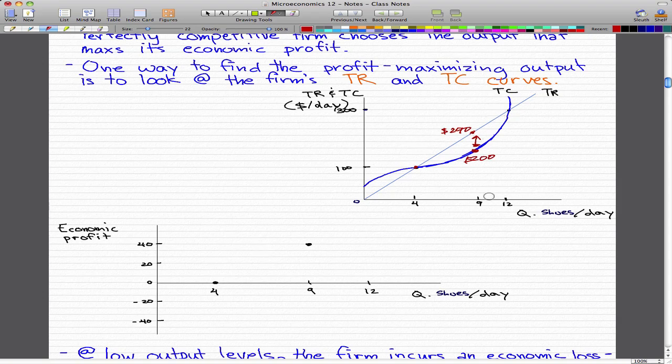Now once we increase the quantities of shoes sold per day to 12, you can see that it goes back to total cost and total revenue being the same amount. In that case, total revenue is $300 per day and total cost is $300 per day. $300 minus $300 is zero. So we go back to the beginning.